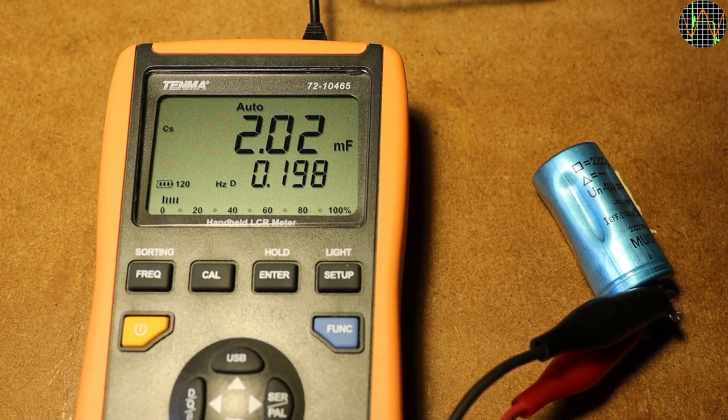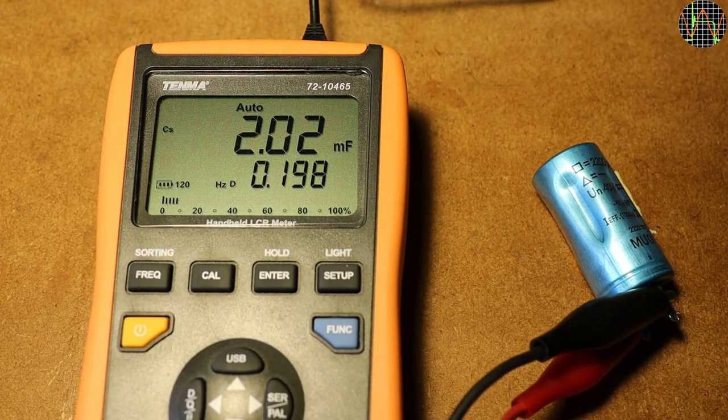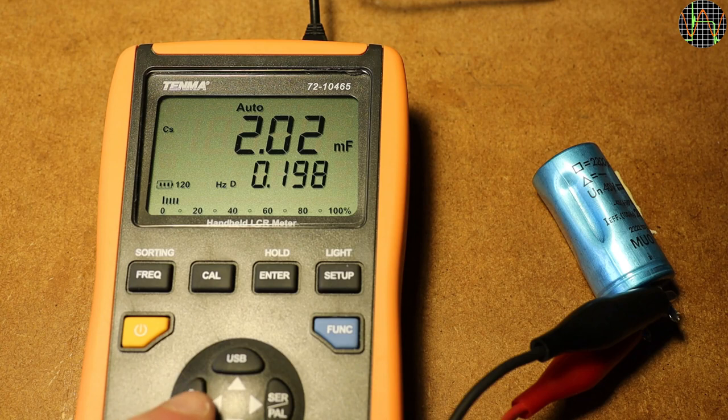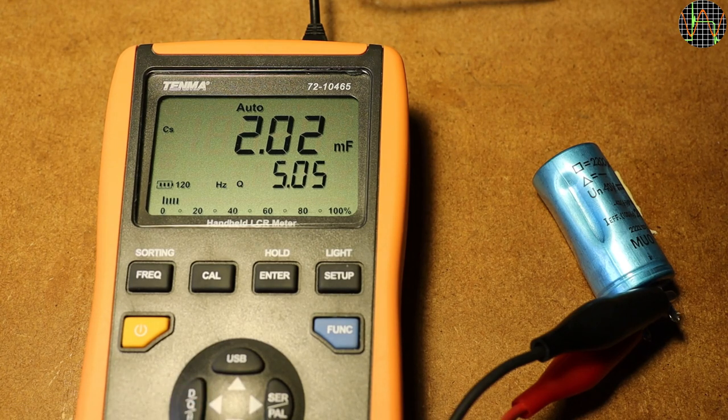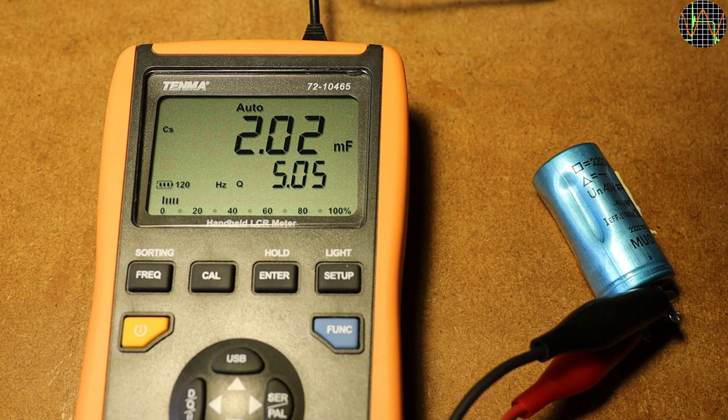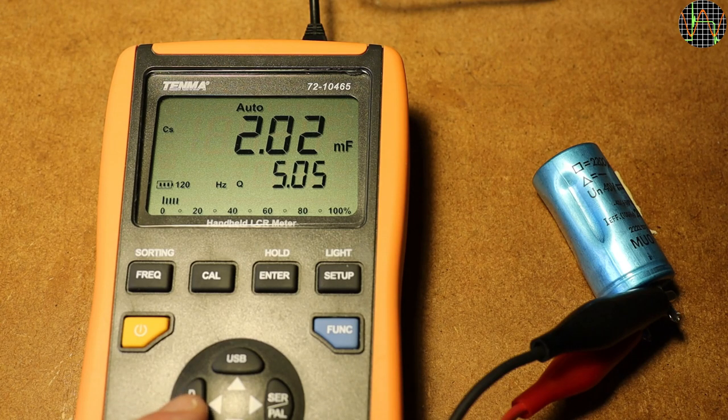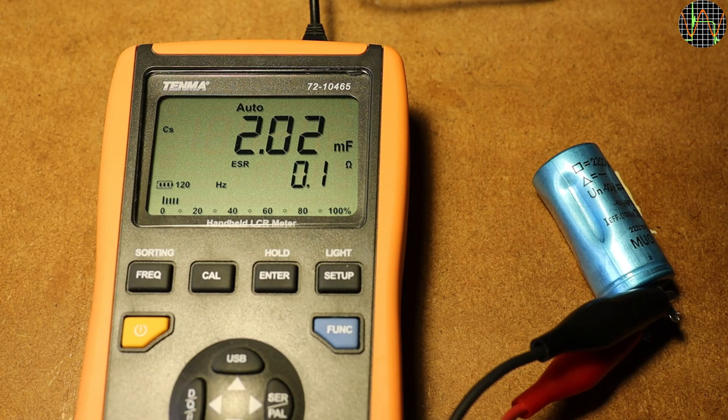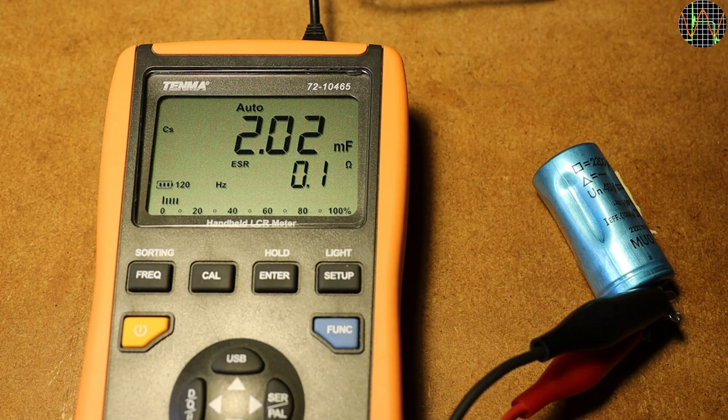Oh, and I am sure you are as curious as I was: are these 38-year-old electrolytic caps still any good? Well, the first one is slightly low on capacitance, 2.02 instead of 2.2 mF, but the electrolytic caps generally have a large tolerance from factory, so I consider this normal. ESR with 0.1 ohm is quite decent.